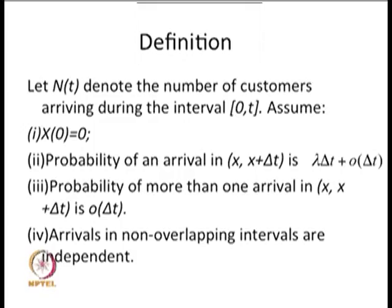The fourth assumption: arrivals in non-overlapping intervals are independent. That means if arrivals occur in one interval and another non-overlapping interval, those arrivals are independent of each other — there is no dependency between arrivals in non-overlapping intervals.